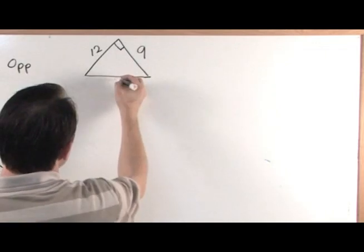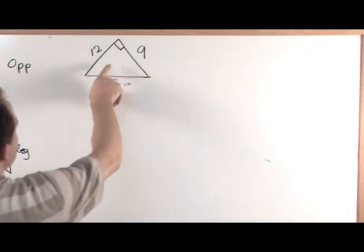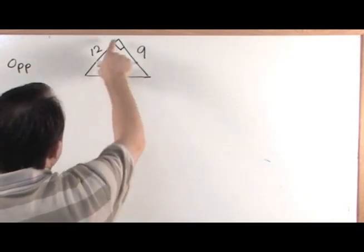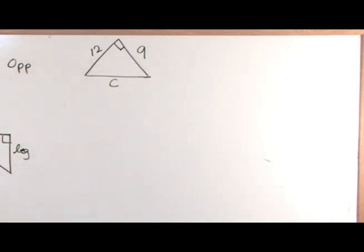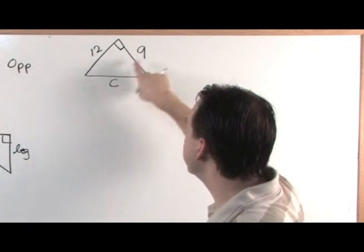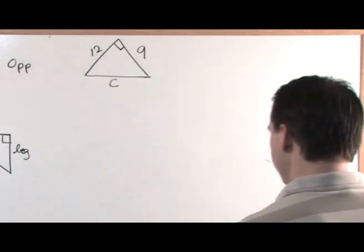The missing length we're going to call C, and that's what we want to find. Notice that C is the length opposite of that angle, so it's the hypotenuse. Because this is a right triangle and you know two of these sides and you need to know the third one, the Pythagorean theorem applies.